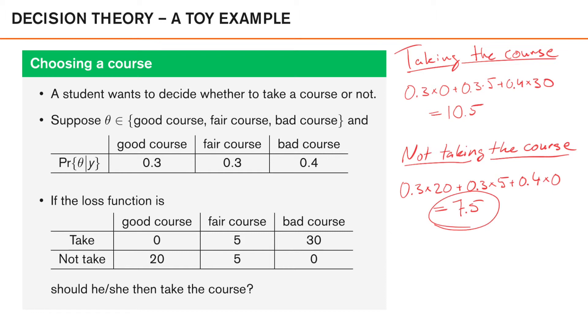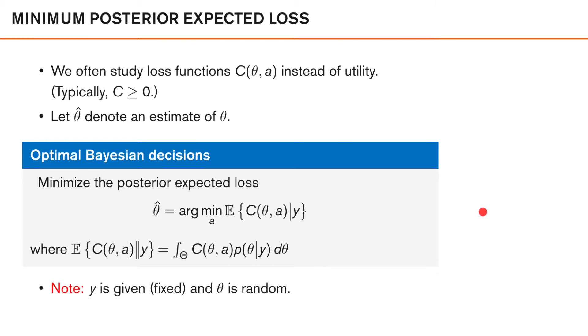Now, let us see if we can introduce some more mathematical notation for this. We often study loss functions C(θ, a) instead of utility. So we have a loss function C of theta, where theta is the quantity that we are interested in, and where a denotes the decision which is dependent on the outcome of theta. So in the example that we just studied, theta was the quality of the course, and a was the decision if the student should take the course or not.